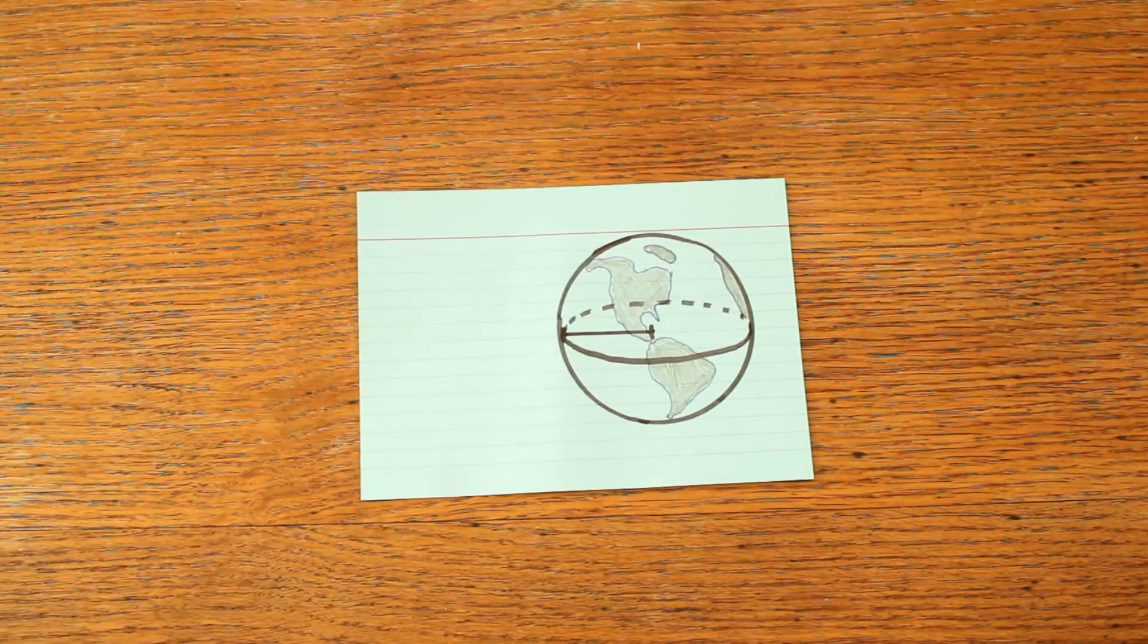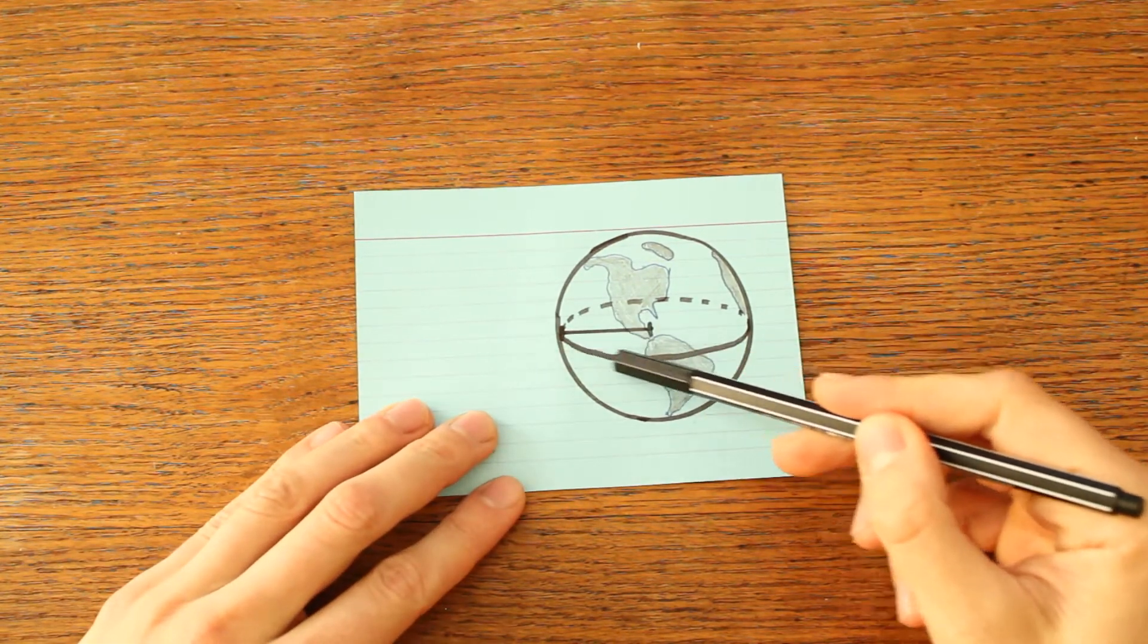Here's a brain teaser, kind of a surprising geometry fact. So imagine you have the Earth, and you tie a ribbon all the way around the equator.